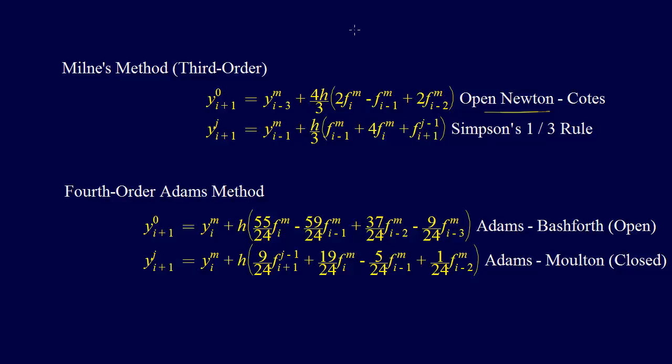And so this goes back to what I was just saying. We're using y_i-3 and f_i-1, f_i-2. So we're using these values of prior. So we're depending on prior information. So these are all non-self-starting methods.